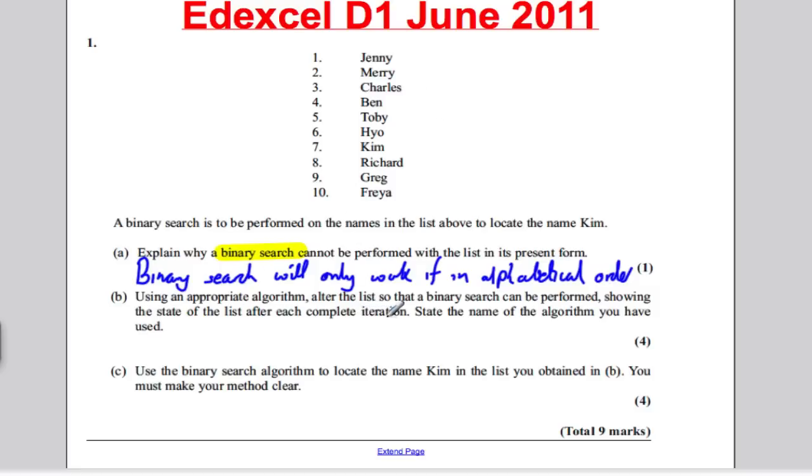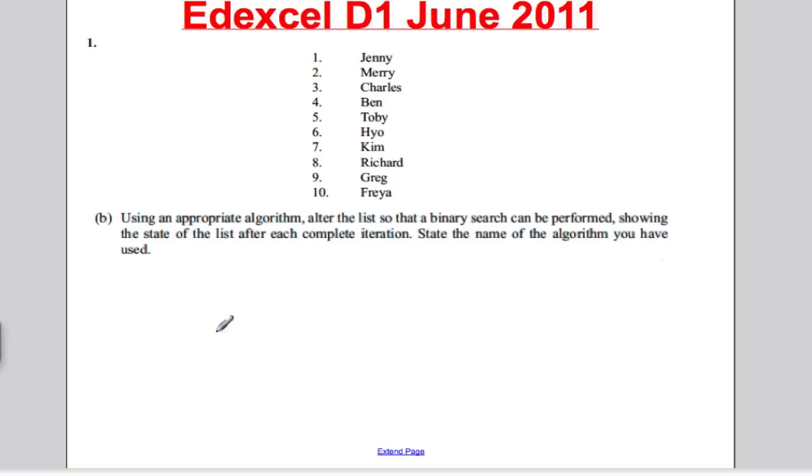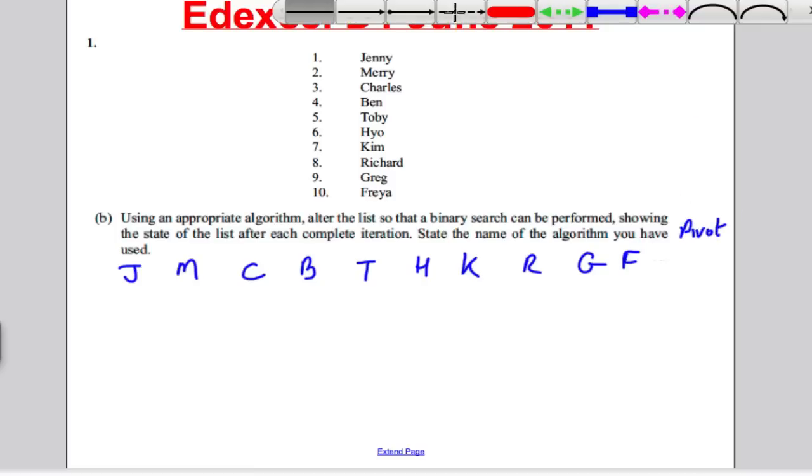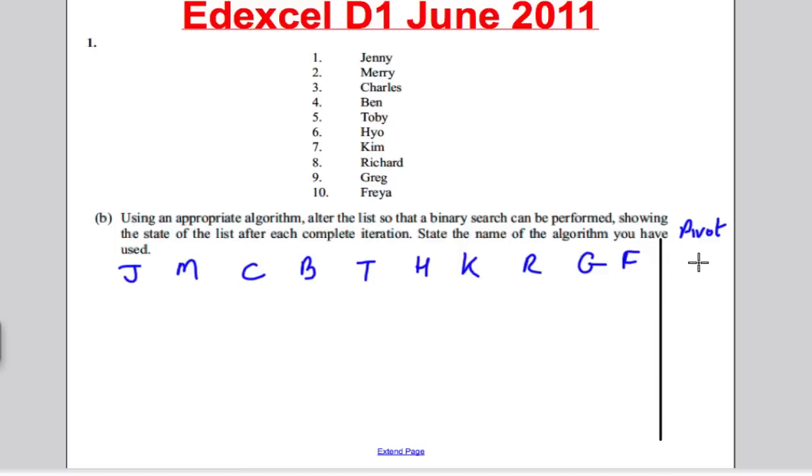It says using the appropriate algorithm, alter the list so the binary search can be performed. So we want to use an algorithm to put these in order. Now we can either use the bubble sort or we can use the quick sort method. So going to the next page here, I'm just going to use the method. So I'm going to write them out as they are: J, M, C, B, T, H, K, R, G, and F, and we're going to write down what we pivot on as well, as we always do, to keep track of that.